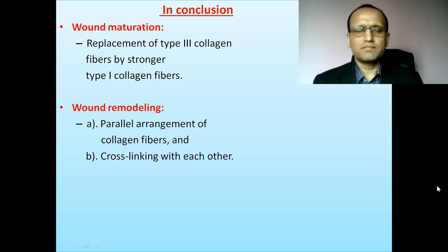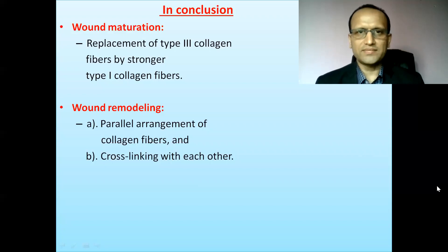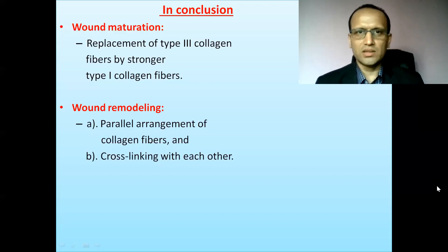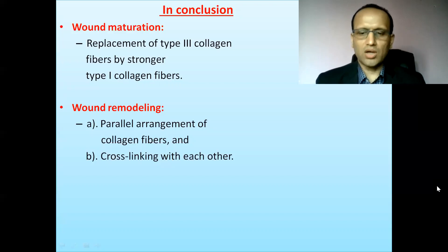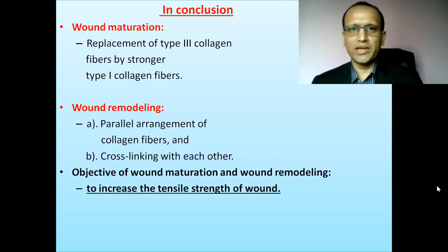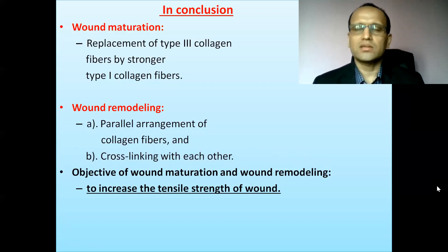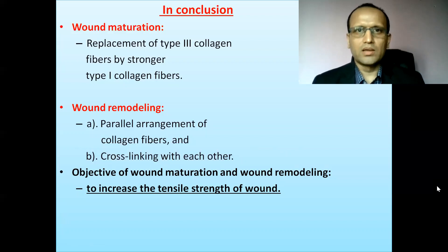In conclusion, wound maturation is defined as replacement of type 3 collagen fibers by type 1 collagen fibers. Remodeling of wound has two components: collagen fibers arranged parallel to each other, and collagen fibers cross-linked with each other. The objective of wound maturation and wound remodeling is to increase the tensile strength of the wound. However, even after maximal wound maturation and remodeling, the healed wound has only up to 80% of the tensile strength of normal skin.